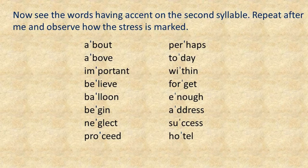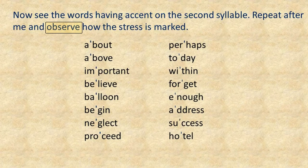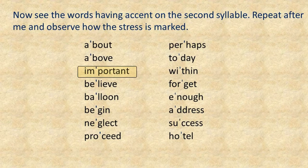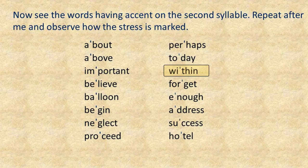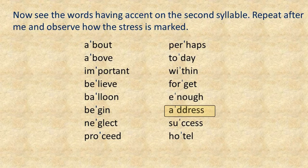Now see the words having accent on the second syllable. Repeat after me and observe how the stress is marked. About, above, important, believe, balloon, begin, neglect, proceed. Perhaps, today, within, forget, enough, address, success, hotel.